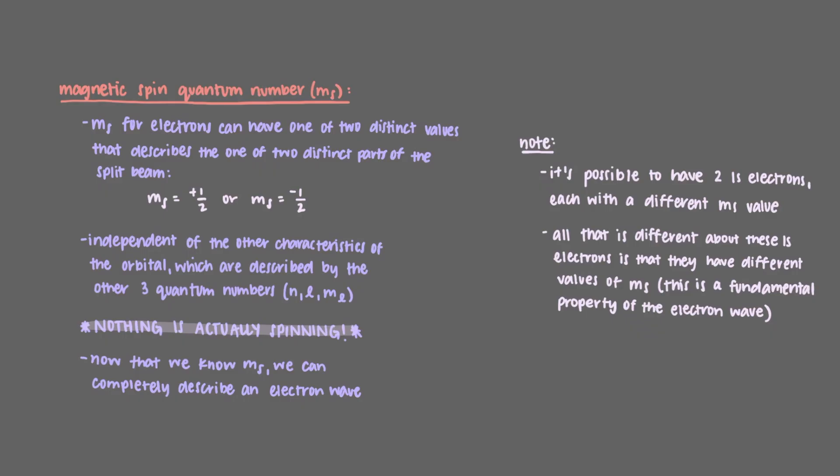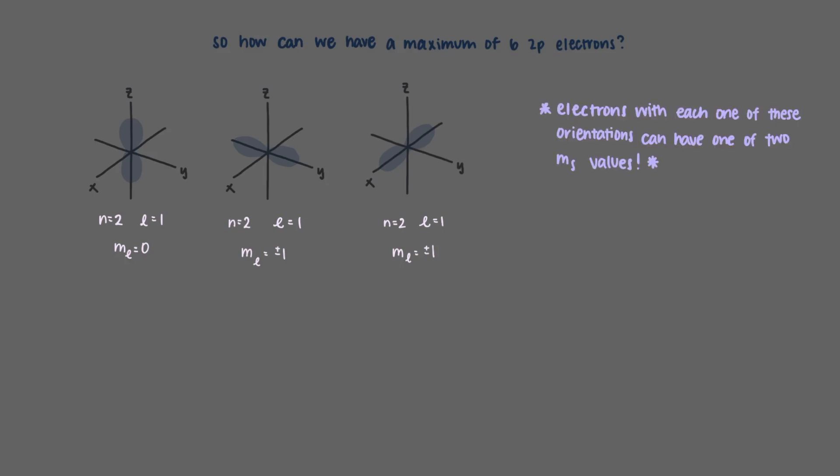So let's put the entire puzzle together and answer the question we keep coming back to. How is it possible that we can have a maximum of six 2p electrons? In the last video we learned that a 2p electron can have three different orientations with these m sub l values. Now we know that electrons with each one of these orientations can have one of two m sub s values. So these are all of the different 2p electrons that can exist. Notice that there are six of them.